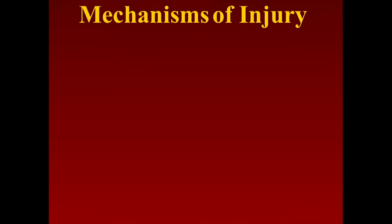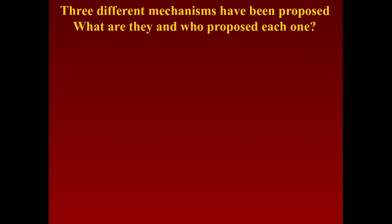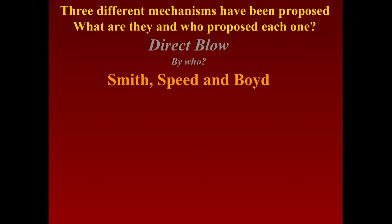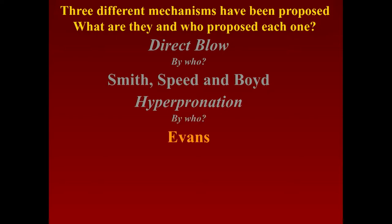You've got to establish a correction of the deformity of the ulna first, to facilitate the radial head reduction. Different mechanisms have been proposed. Years ago it was thought to be a direct blow that pushed the radial head out — this was in the 1930s and 40s. Then there were studies by Evans who took the muscles off in a static setup, and found that hyperpronation produced the same thing.